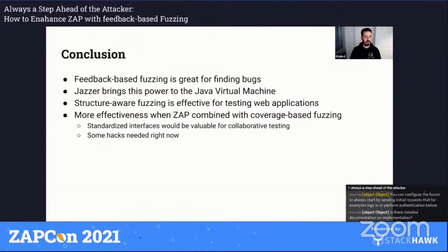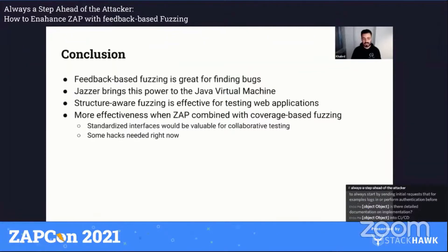To conclude my talk: I hope I was able to convince you that feedback-based fuzzing is really great and effective in finding bugs. With Jazzer, we work hard to bring the power of feedback-based fuzzing into the JVM and JVM-based languages. Based on our work fuzzing web applications, structure-aware fuzzing — making the fuzzer aware of the structure of inputs expected by the application under test — is really effective. And combining ZAP and Jazzer results in better, more effective testing than when using each tool separately.